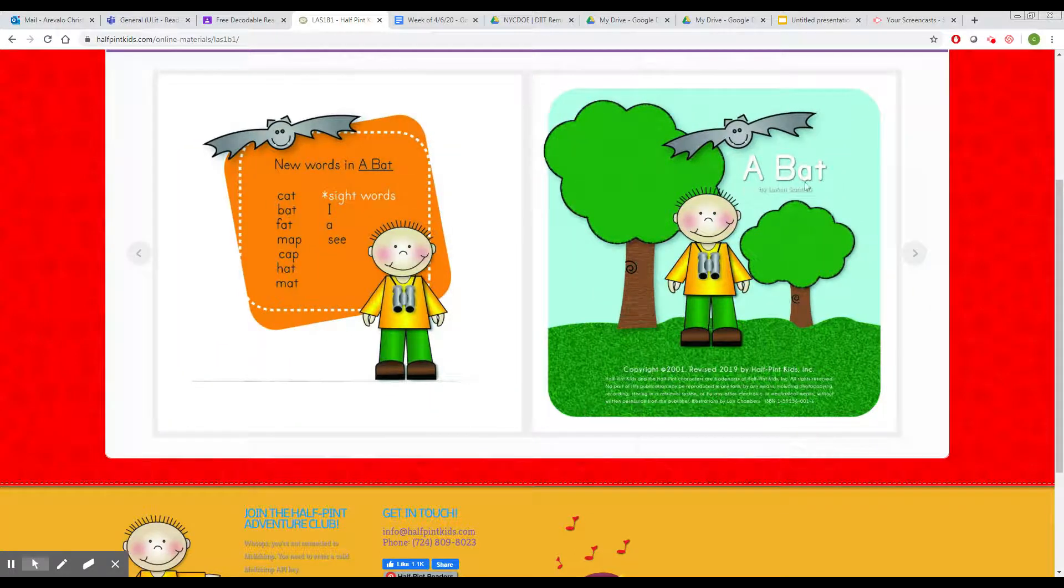A Bat. Here are some words we're going to see in the story today. I, a, c, and some of these words: cat, bat, fat, map, cap, hat, mat. Ready to read?